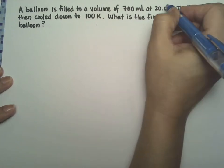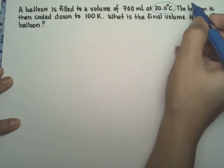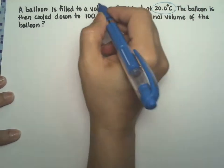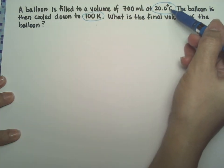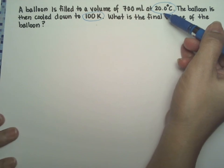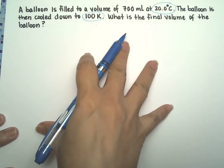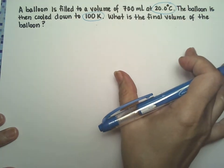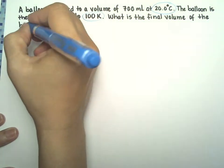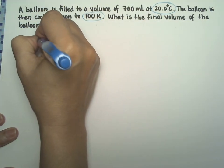First thing that I want you to notice is that they give us one temperature in degrees Celsius and the other one in Kelvin, so we're going to have to change the Celsius to Kelvins. For this particular problem, since they're telling us the temperature and they're asking us the volume, we're going to go with Charles' law.